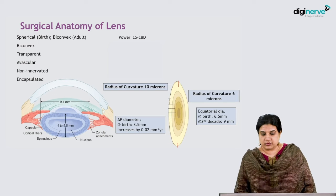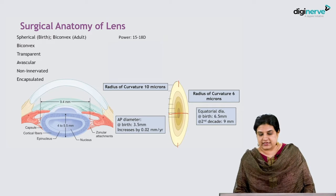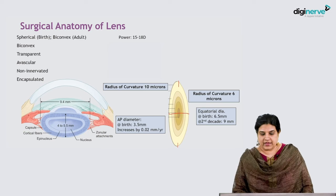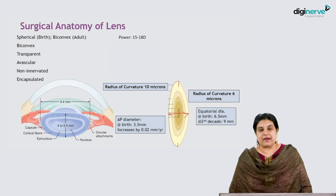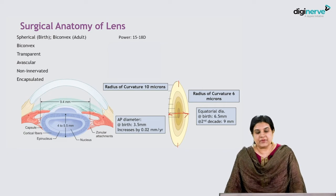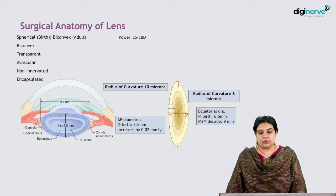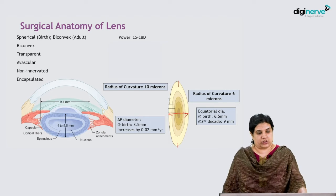The anterior-posterior diameter refers to the distance between the anterior and posterior poles. At birth this is about 3.5 millimeters, and it increases by 0.02 millimeters each year.